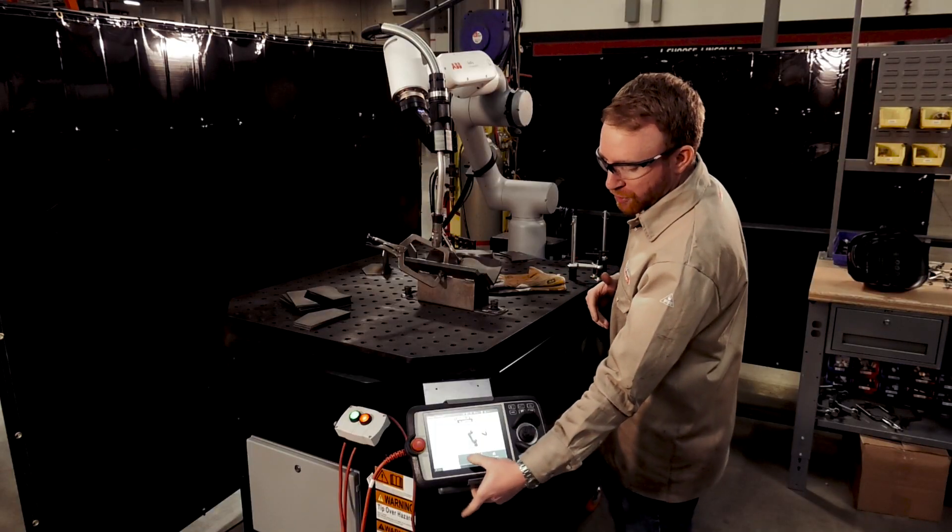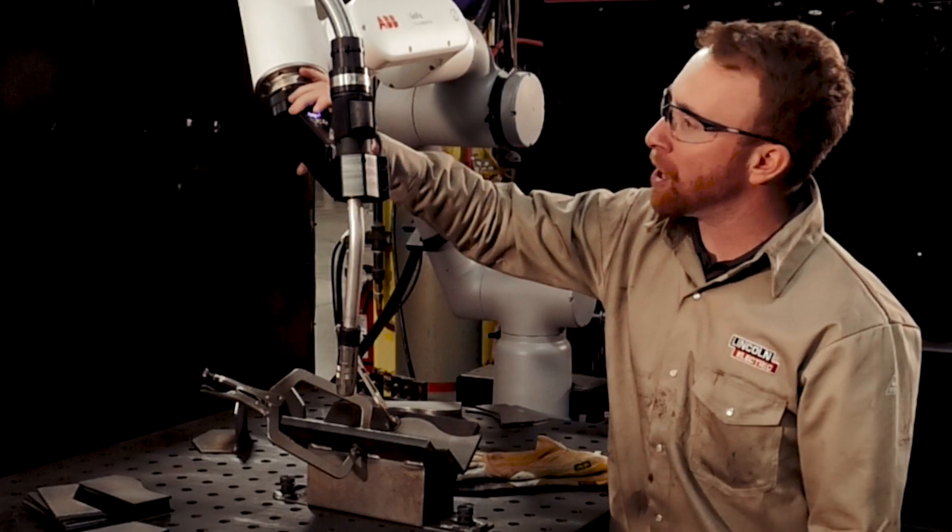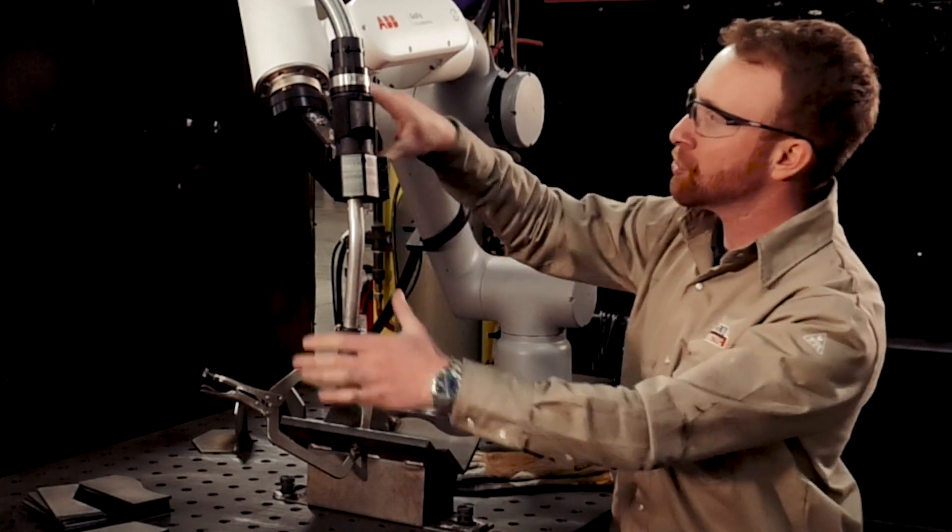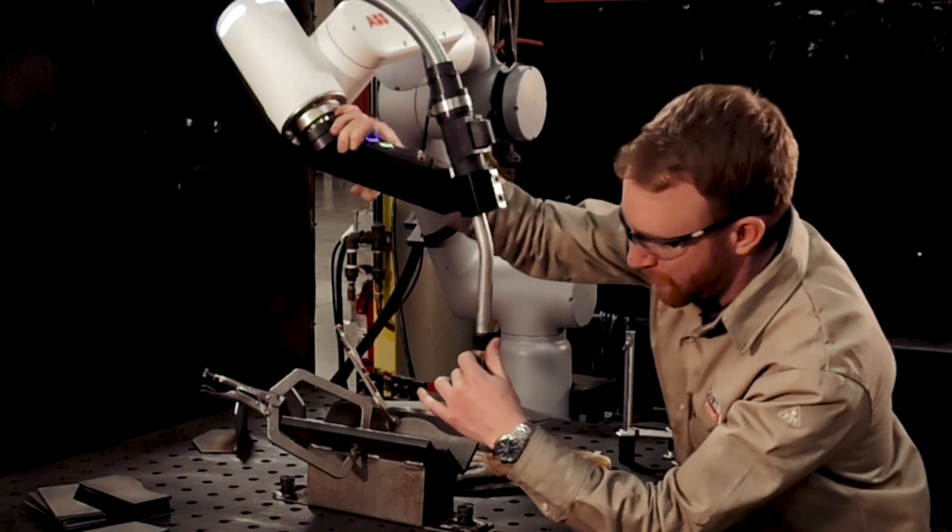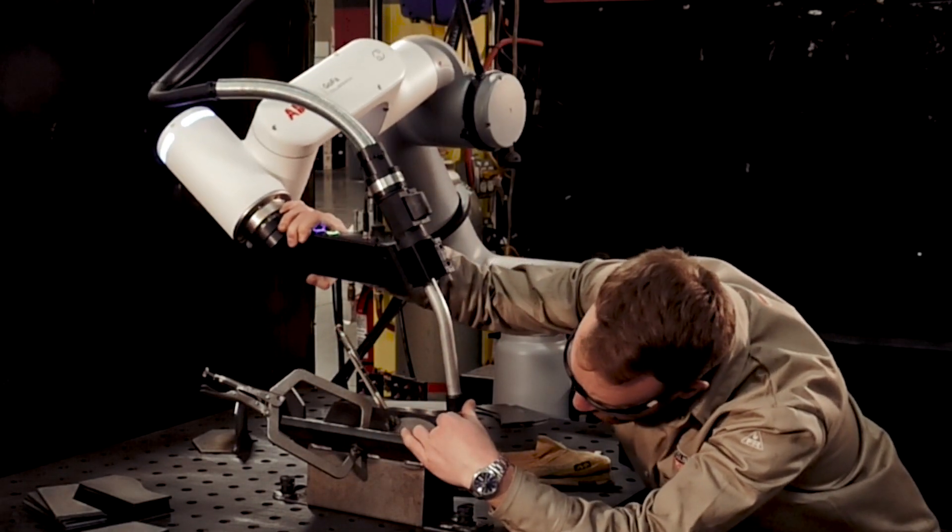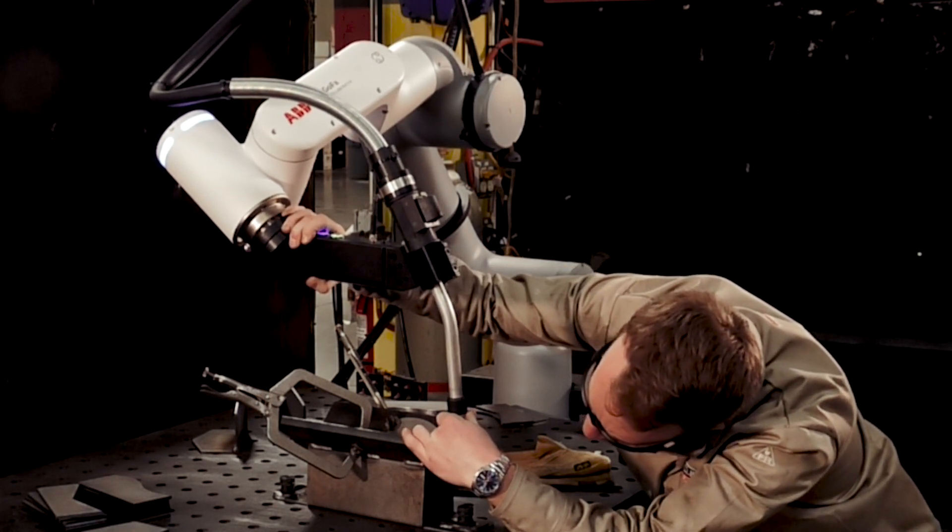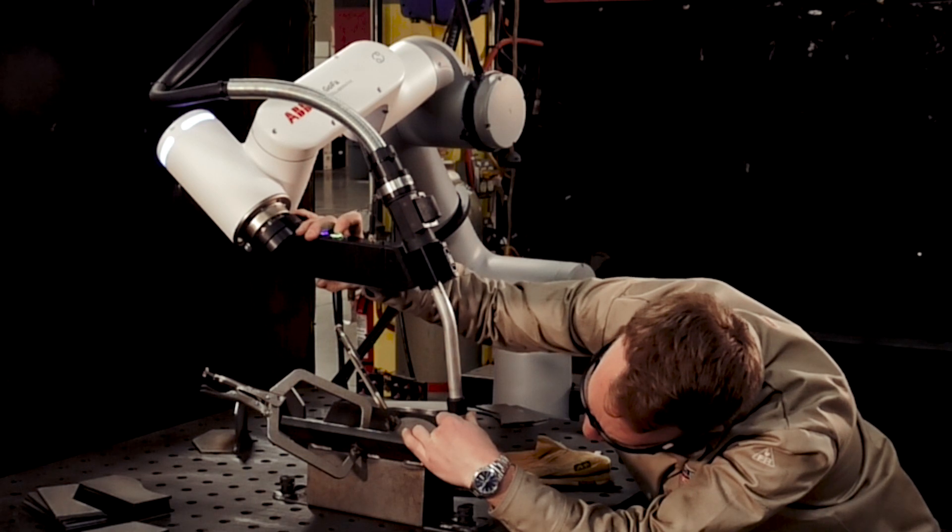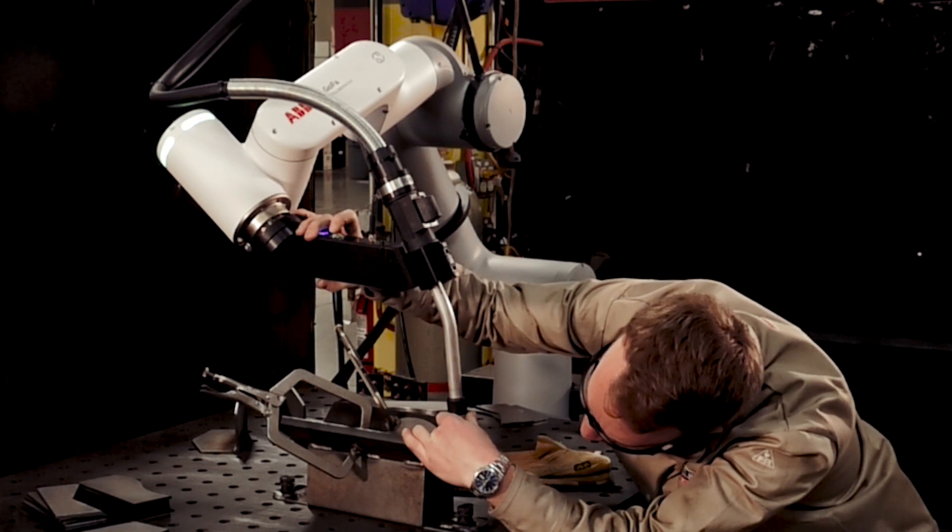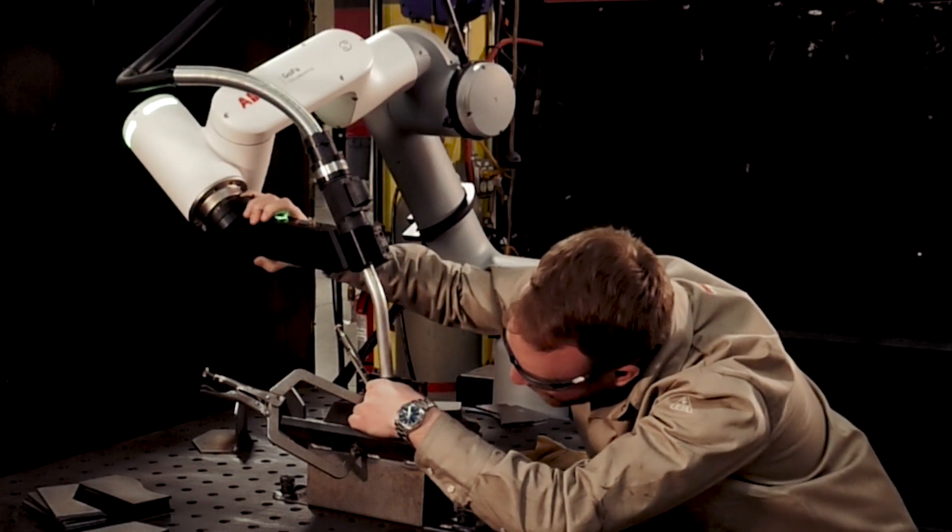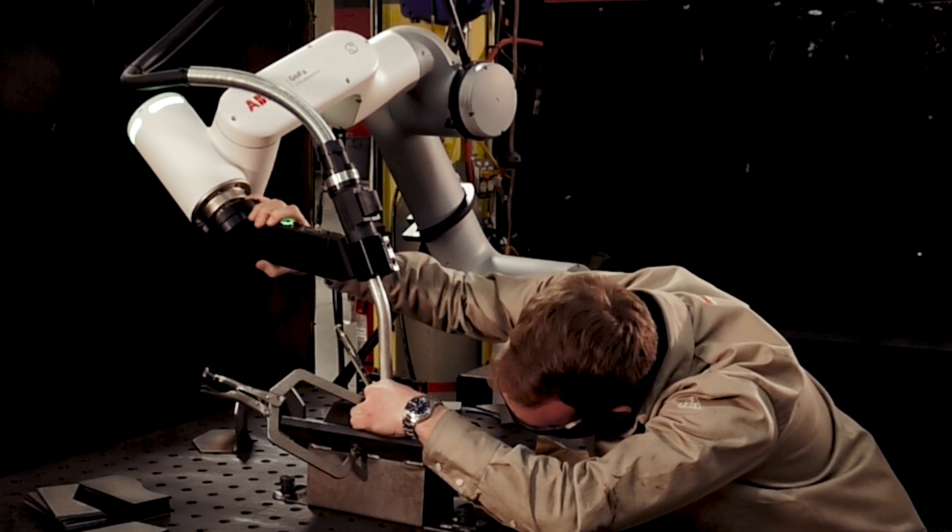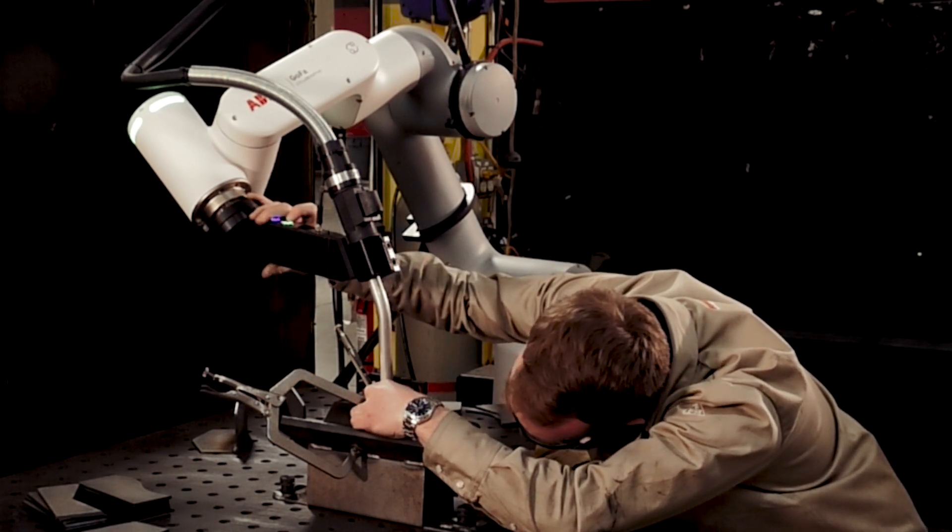Just like regular, we're going to go start here. We're going to jog that machine to our first weld point. Then we're going to make that right about here. We're going to press that green button. Then we're going to go to the end of our weld, and we're going to hold that green button down.